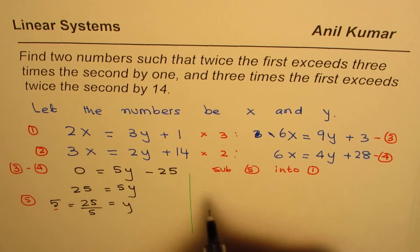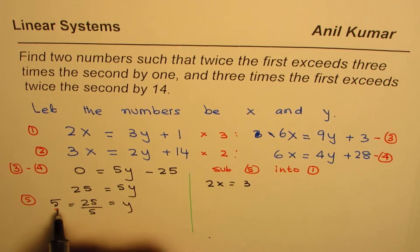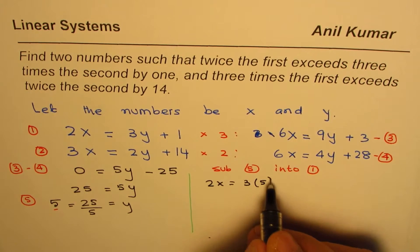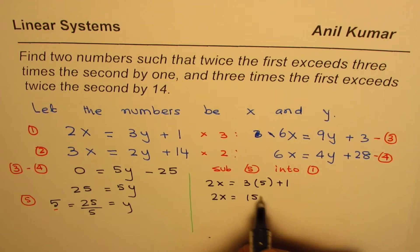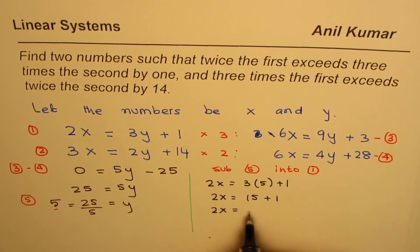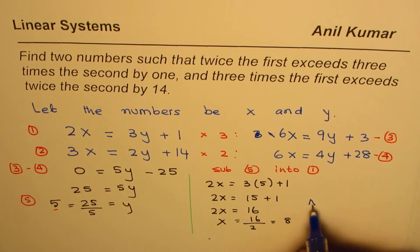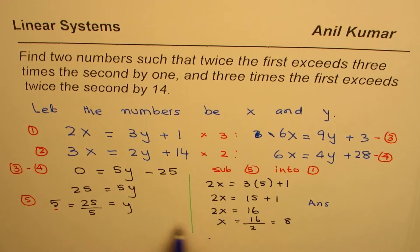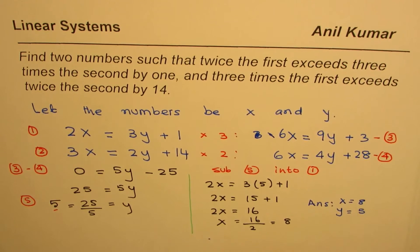So 2x = 15 + 1, which gives us 2x = 16, or x = 16 divided by 2, which is 8. Therefore, our answer is x = 8 and y = 5.